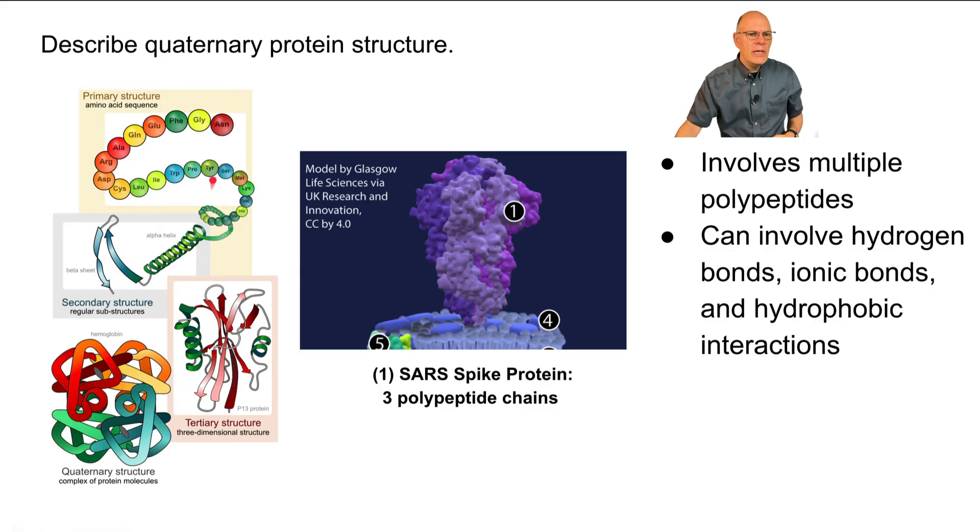So in this diagram, actually, you can see all four of the levels. So here's the primary structure. Here's an alpha helix secondary structure. This hairpin turn is actually part of the tertiary structure over here. And then you have multiple polypeptides interacting. This molecule looks a lot like hemoglobin.